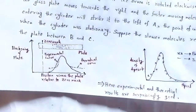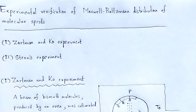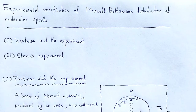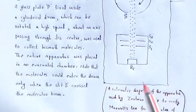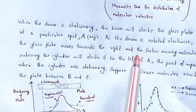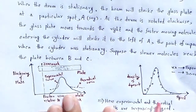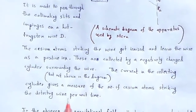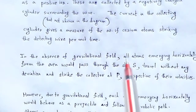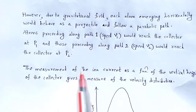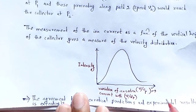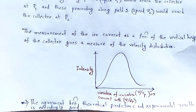So, with the help of this video lecture, we understand the experimental verification of Maxwell-Boltzmann distribution of molecular speeds. Two experiments are conducted: one is Jatman and Co experiment and another one is Stern's experiment. We discussed the experimental setup, working principle, graphical determination, and finally concluded how these two experiments verify Maxwell-Boltzmann distribution of molecular speeds.